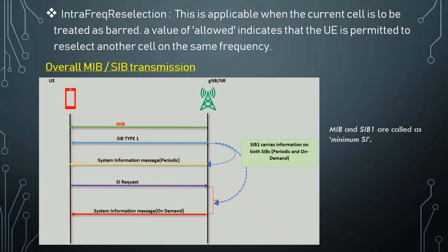The MIB and SIB acquisition process varies case by case. In case one, there is no on-demand SIB system information and no previously stored SIB. In the other case, on-demand system information is present. We will look at both cases one by one. In case one we have no on-demand SI and no previously stored SIB.